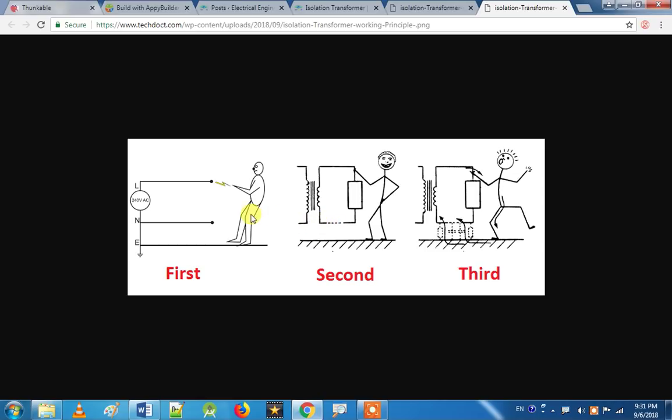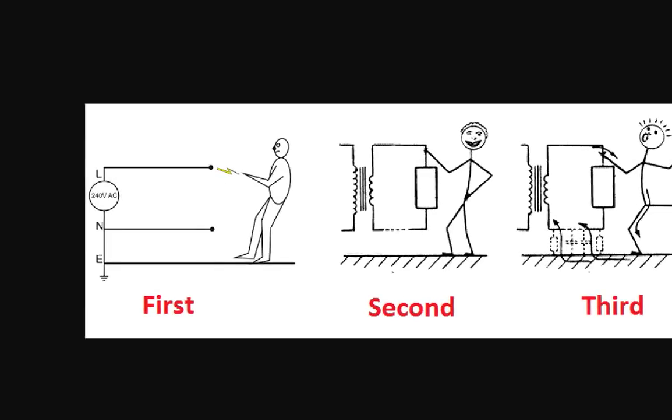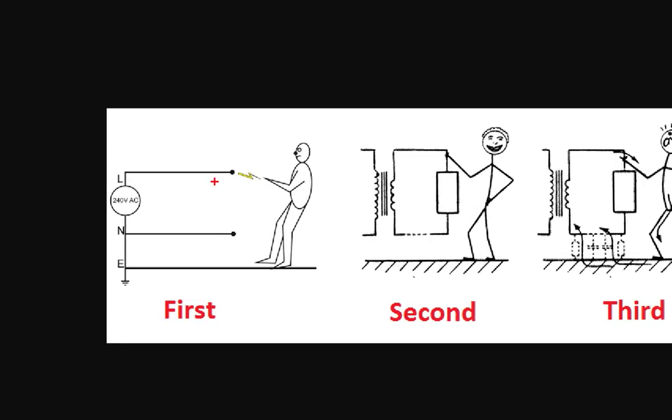What happens when a person touches the line without an isolation transformer? The line current flows through the body. The ground is the source. We are already connected to neutral, and the current will return through the ground. We will feel the shock if there is a current path.